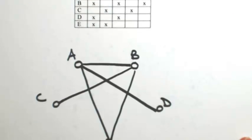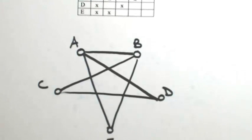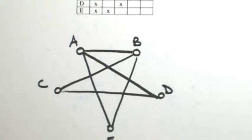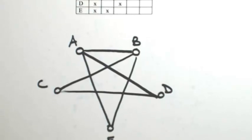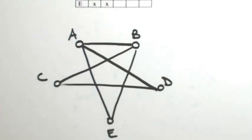Okay, C goes to B and D. So C already has the B, so then C to D. D goes to A and C. I already got it. And E goes to A and B. I already got it.